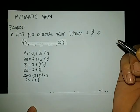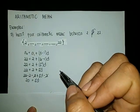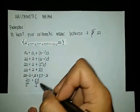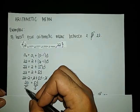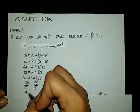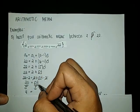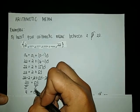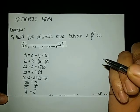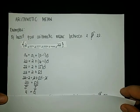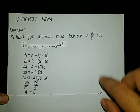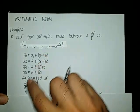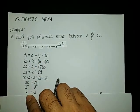Solving for d, let us divide both sides of the equation by 5. So 20 divided by 5 equals 4, and 5d divided by 5 gives us d. Therefore, our common difference d is equal to 4. Each term in this arithmetic sequence will have a common difference of 4.